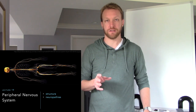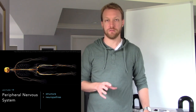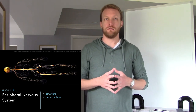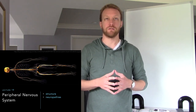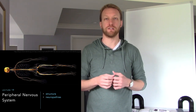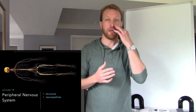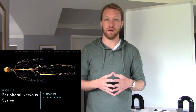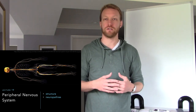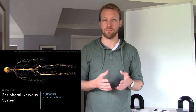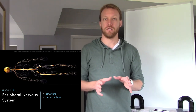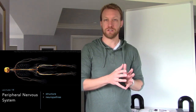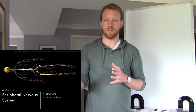The peripheral nervous system is going to connect our central nervous system — the brain and spinal cord — with the rest of our body. The brain and spinal cord house the majority of our neurons, and then the peripheral nervous system has a few cell bodies scattered throughout the body in what we call ganglia.